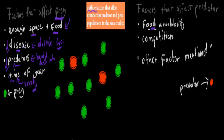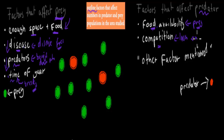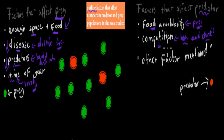Factors that affect predators: food availability is key, and for predators their food is the prey — so the number of prey is important. The more prey there is, the more food they have. Competition is also important. For example, lions and cheetahs both live in the same ecosystem and go for the same food. If there's lots of prey available, that's good for both. But if there are too many lions and cheetahs, there's too much competition and prey is spread over too many animals. So more competition means smaller numbers; more food means higher predator numbers.